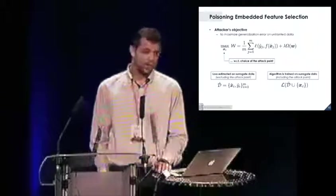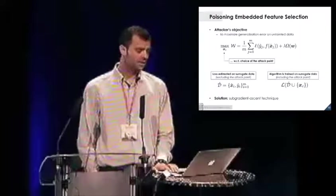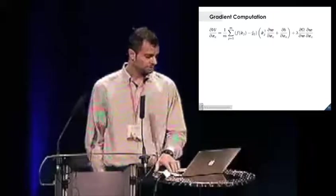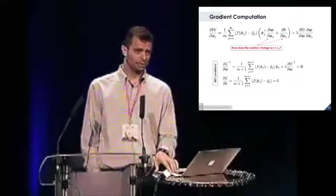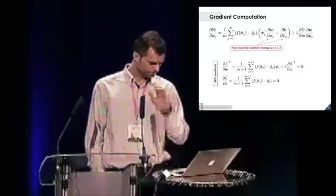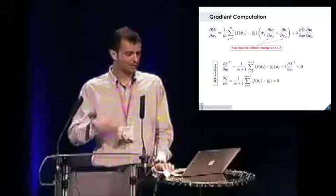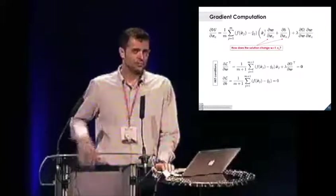We solve this problem by considering a subgradient ascent technique. We basically differentiate the attacker's objective with respect to the attack point. The problem is to compute this expression, you need to understand how the solution of the learning algorithm, so the vector W and the bias B, change while you're perturbing the attack point into the training set. To do this, we need to make some assumptions. In particular, we exploit a trick from the incremental learning field, where the idea is to assume that the Karush-Kuhn-Tucker conditions remain intact while the point is moving into the training data. This means that essentially we assume that the solution remains at the optimum.